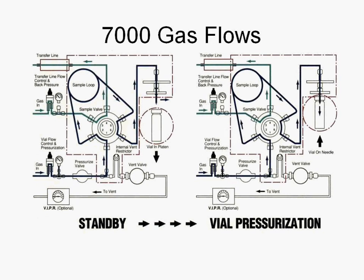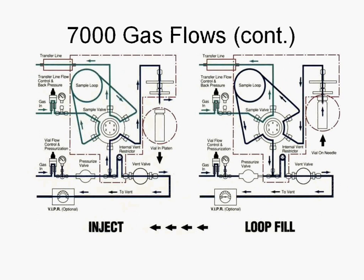During standby flow, our gas comes in, sweeps our sample loop, and comes out our sample needle. You can also see that the carrier line comes in through the six-port valve and goes right back out to our GC. During both the standby and vial pressurization modes, there should be no gas flow coming out of the vent. The only difference between these two modes is when the vial goes up onto the needle to be pressurized. From vial pressurization mode, we go to loop fill mode. There is a burst of flow out the vent during loop fill mode, and then there should be no gas flow.